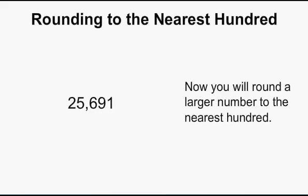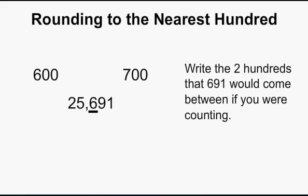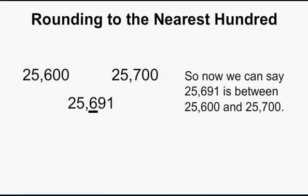Now we will round a larger number to the nearest hundred. We have 25,691. Underline the number in the rounding place, which is 6, because 6 is in the hundreds place. Write the two hundreds that 691 would come between if you were counting. I'm just focusing on the hundreds place, because that is what we are rounding to. So, 25,691 is between 25,600 and 25,700.